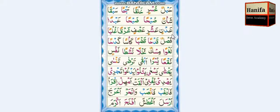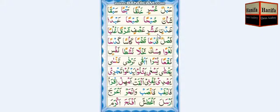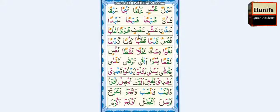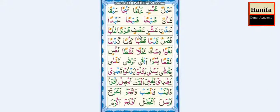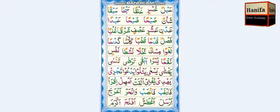Ayn. Dal, Fatha — ad. Nun, Kasratan — nen. Ad-nen. Ayn, Sheen, Fatha — aash. Ra, Kasratan — rin. Aash-rin. Ayn, Saad, Fatha — aos. Fa, Fathatan — fin. Aos-fin. Ghayn, Ra, Fatha — gharr. Qaf, Fathatan — qan. Gharr-qan.